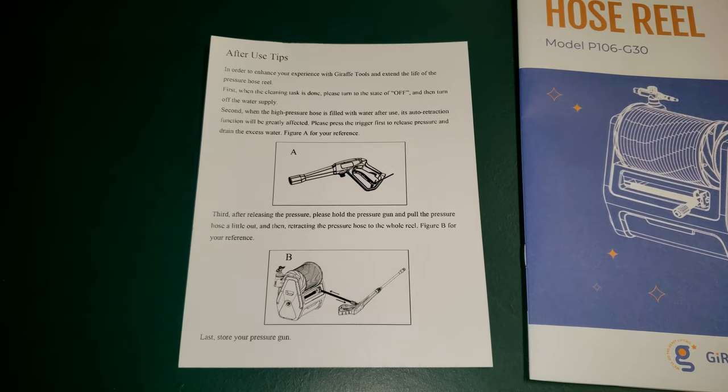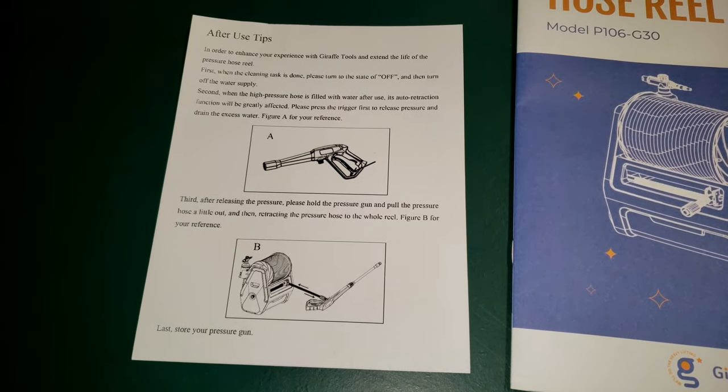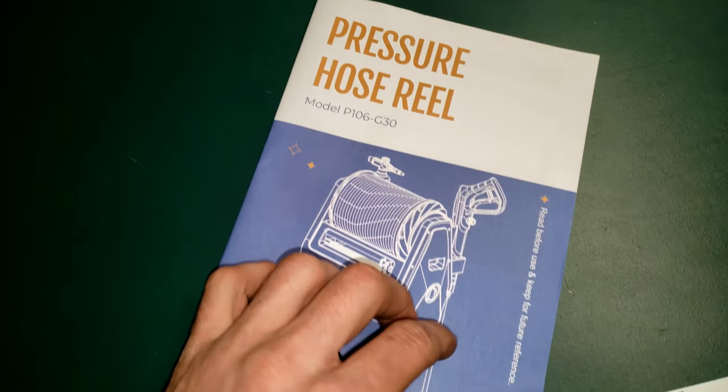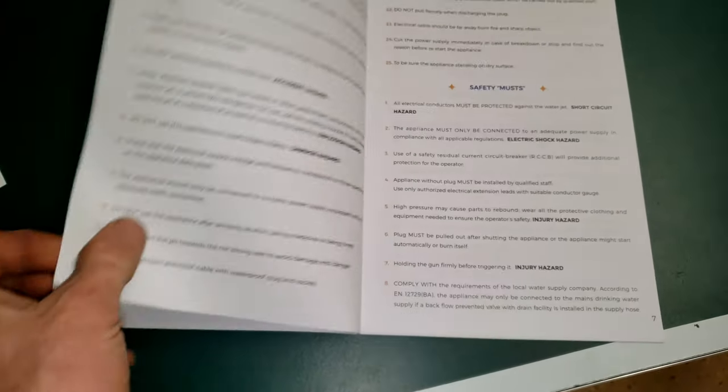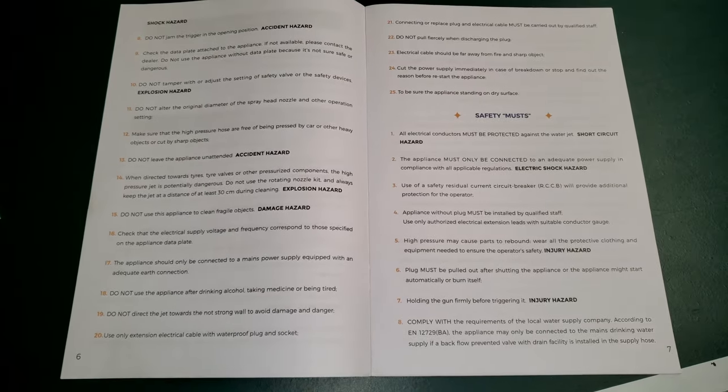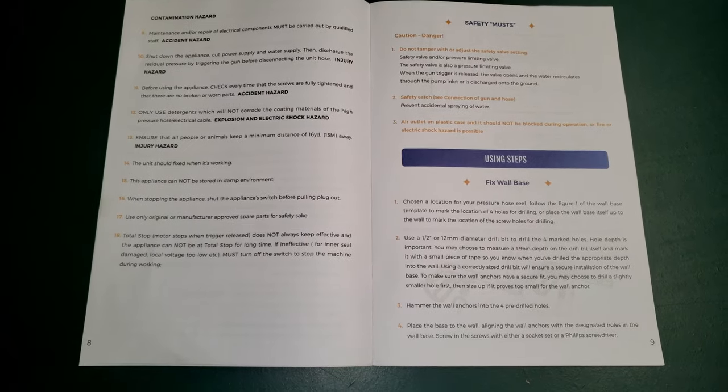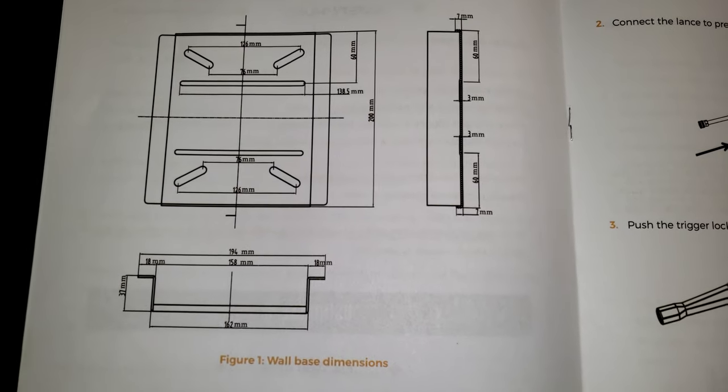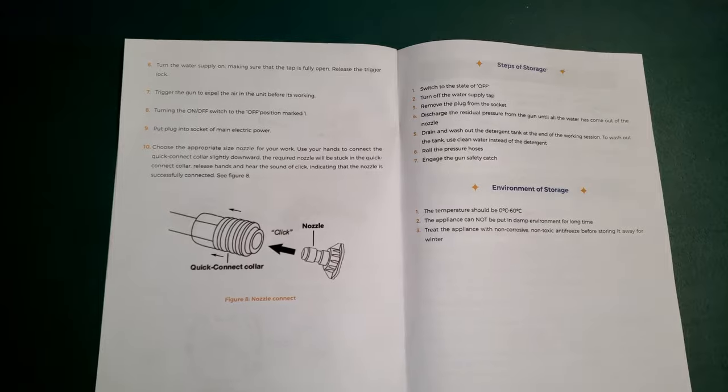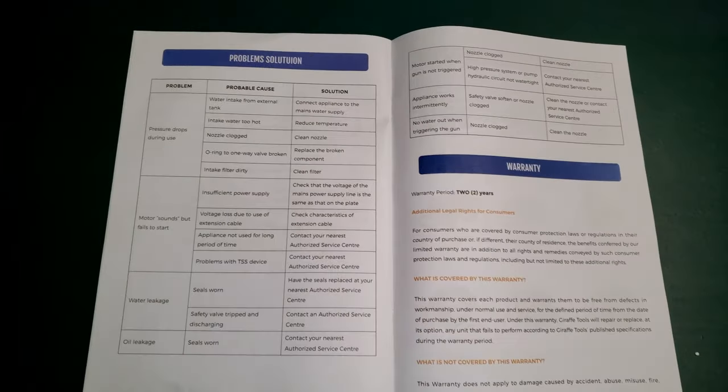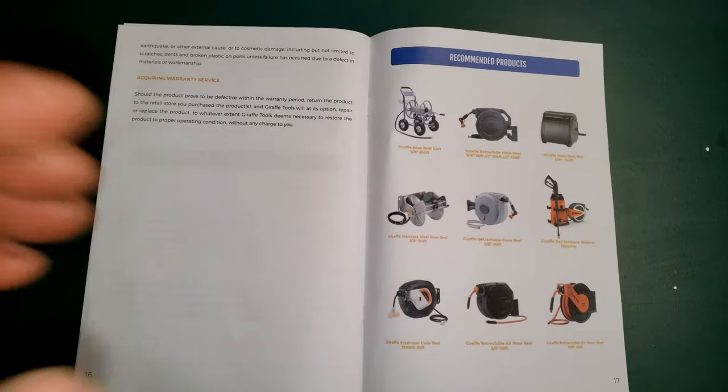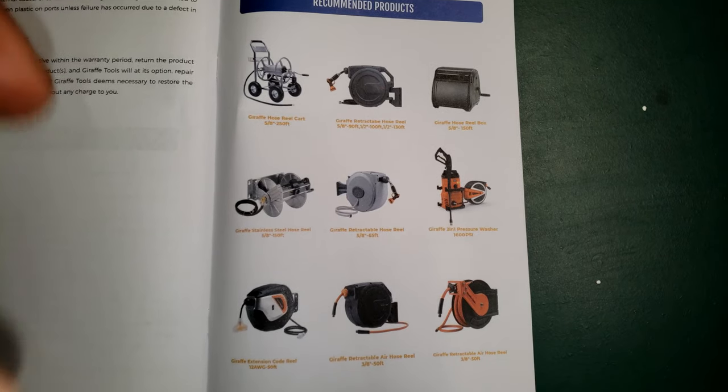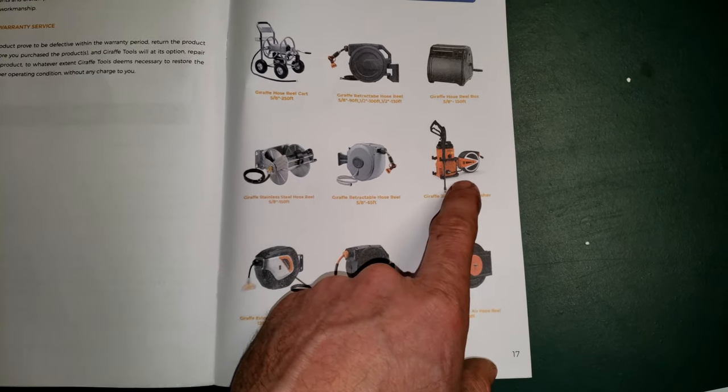And as usual, here's just a look through the user manual and such. So if you want to pause that to take a look at anything here, I'll just flip right through it. Here's a look at some of the other products they have. I guess this is the older two-in-one pressure washer before it was all integrated into one piece like the new one. And that's it.